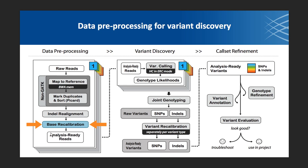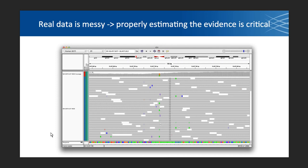We are at the last preprocessing step before we go into variant discovery. Why do we need BQSR? Well, real data contains errors due to artifacts of sample preparation, sequencing artifacts, and mapping artifacts. The sequencer gives a base quality score that it thinks is confident, but it doesn't capture the range of these types of artifacts. We want to correct for them because our downstream tools rely on the base qualities to weigh the variant calls they make.